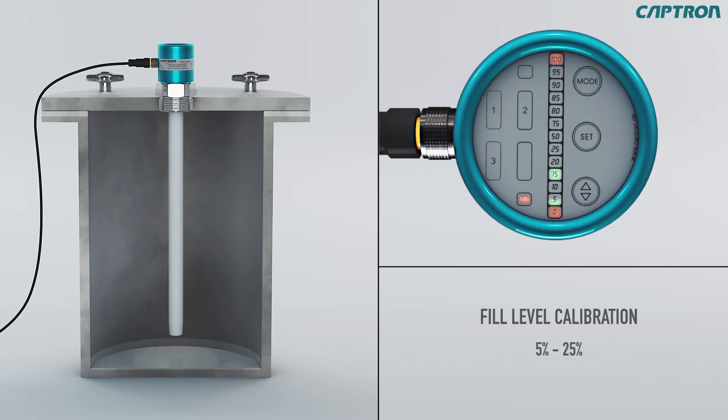Fill the tank with 5 to 25% of the desired measurement range. Now with up down you can set the value which corresponds to the actual fill level. Then confirm the value with set.